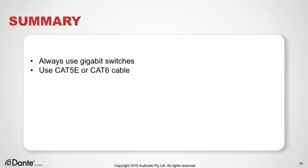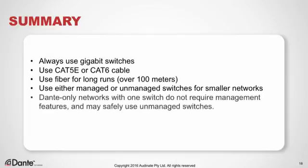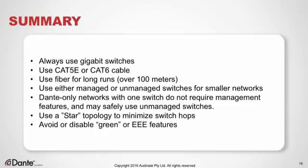Let's summarize this section. With Dante, always use gigabit switches. Use Cat5e or Cat6 cable. Use fiber when you must deal with very long runs over 100 meters. Use either managed or unmanaged switches for smaller networks. Remember, Dante-only networks with one switch do not require management features and may safely use unmanaged switches. Use a star topology to minimize switch hops and minimize the possibility of one device disconnecting another down the chain. Avoid or disable green features, or Triple E features, on energy-efficient ethernet.